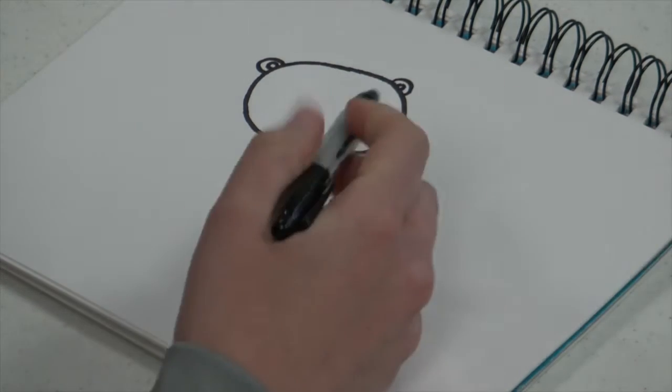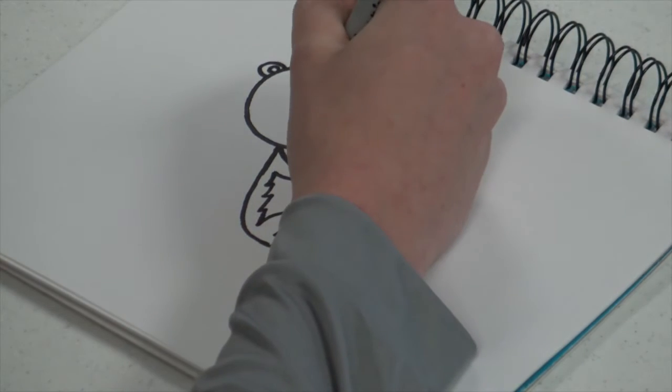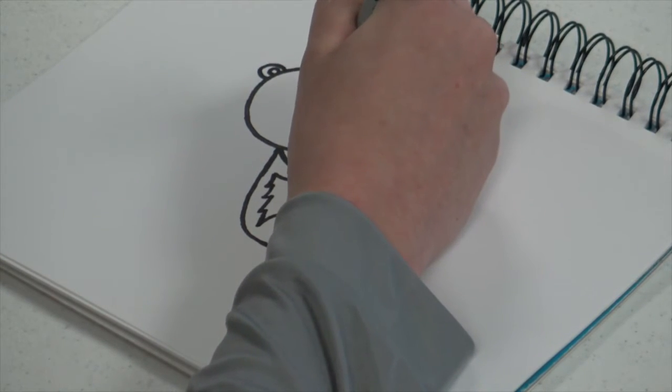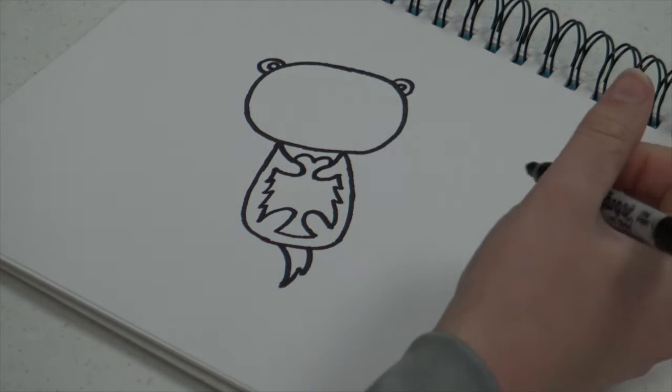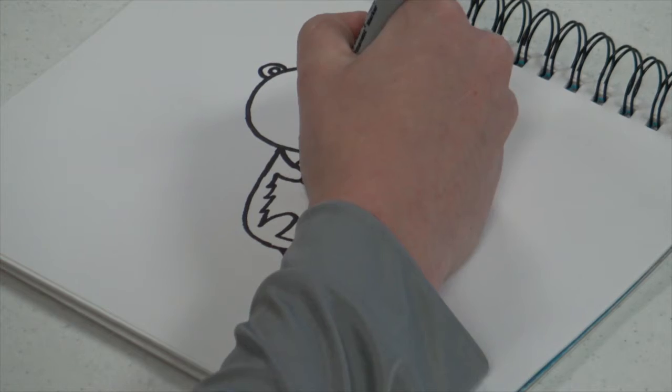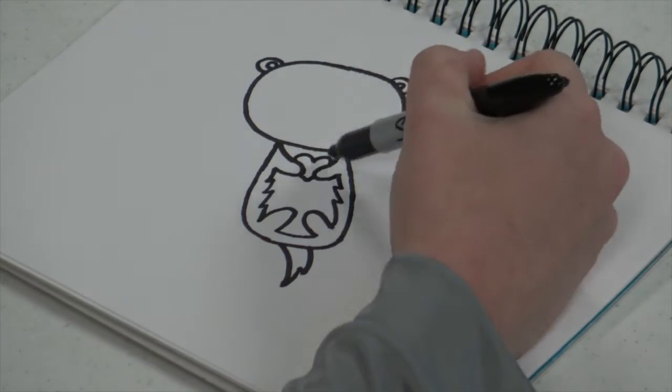Now I wanted the otter to hold a heart. So you're gonna make a little M shape between the two arms. Then on the bottom of the hands you're gonna make a little edge that looks like the bottom of a heart, so it looks like it's holding a heart.